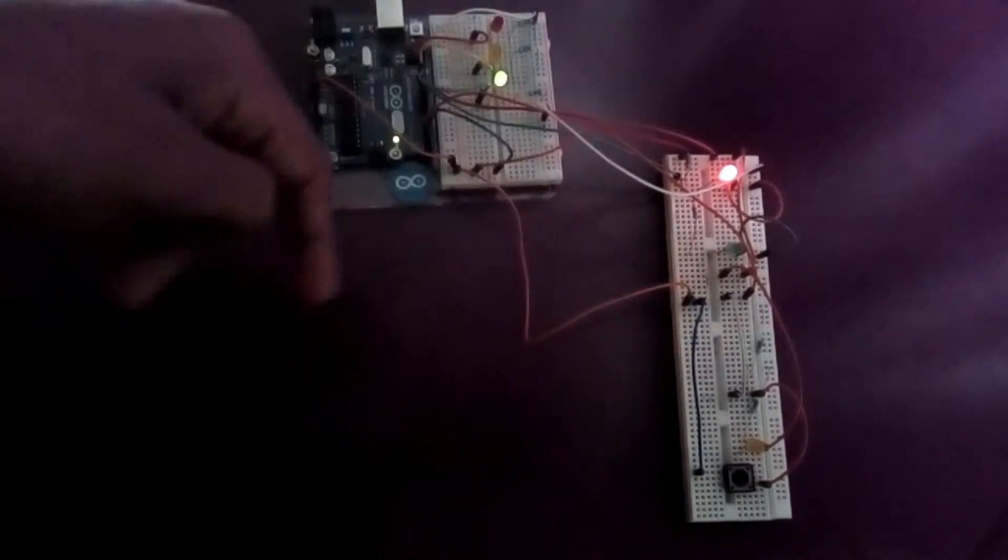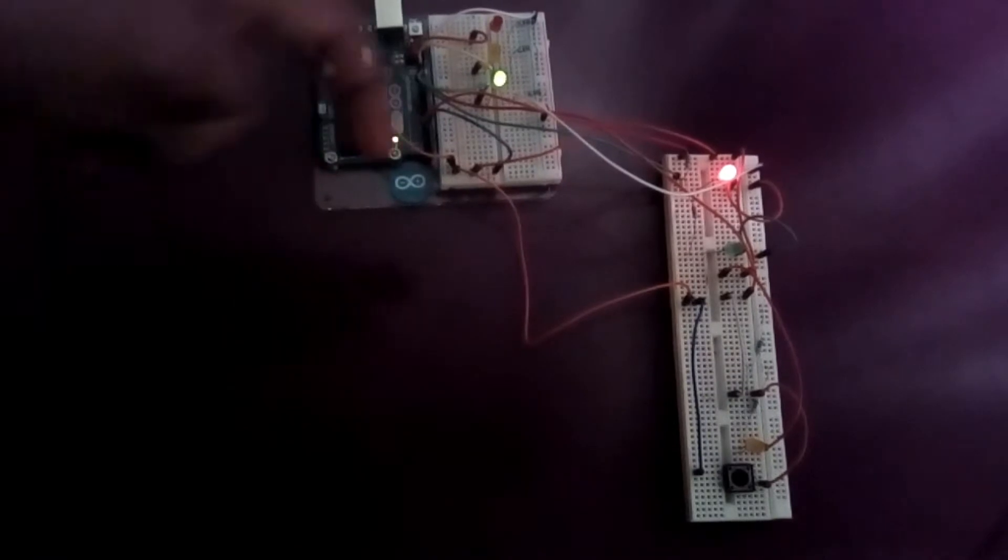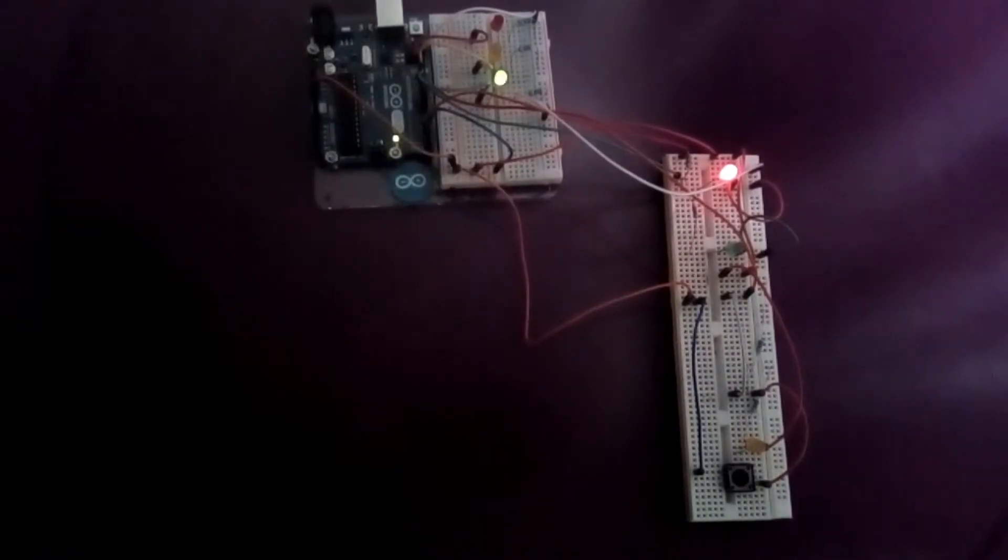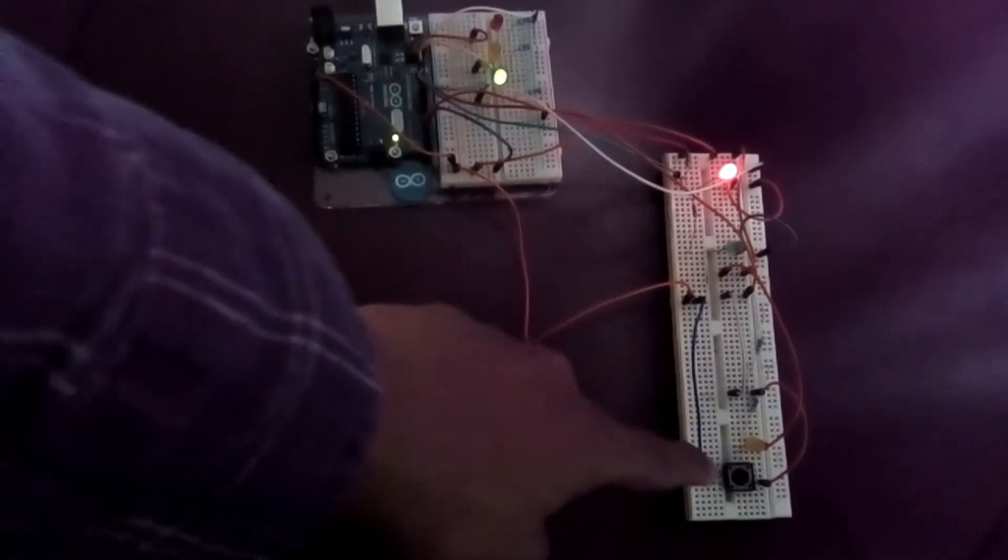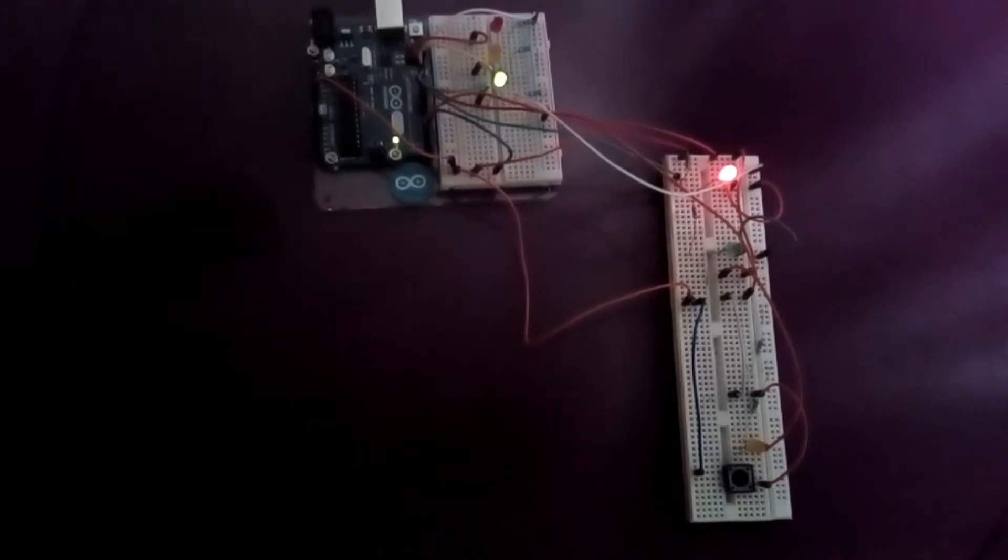And the longer breadboard is the pedestrian side. It has only a red light and a green light. There's also a yellow light to indicate that the button's been pressed and the push to cross button.